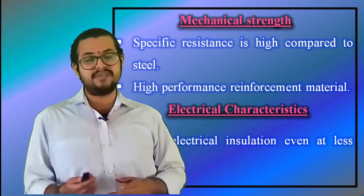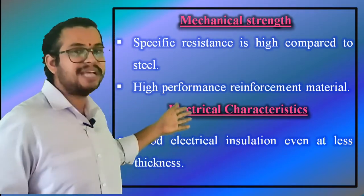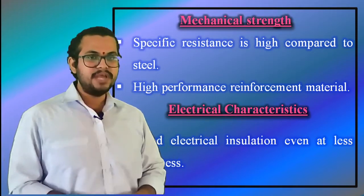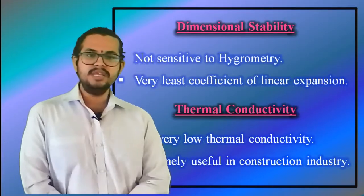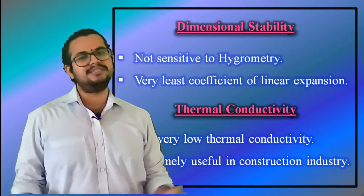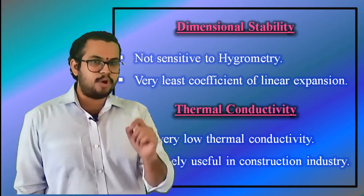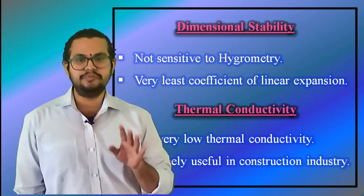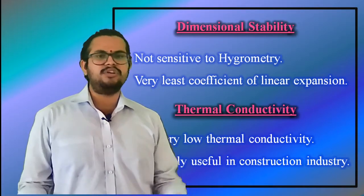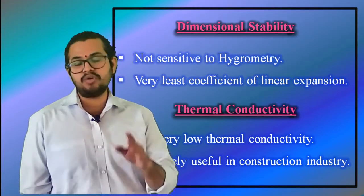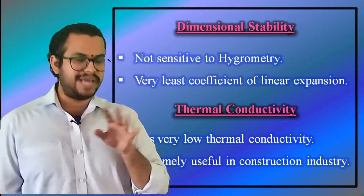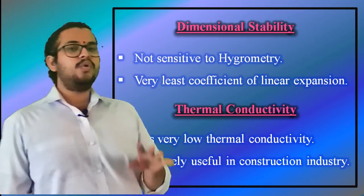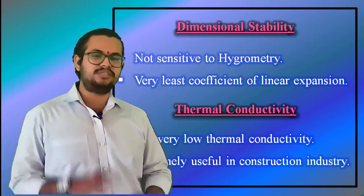Electrical characteristics: fiberglass has good electrical insulation even when its thickness is incredibly small. Dimensional stability: fiberglass is not sensitive to variations in hygrometry — defined as the measure of the moisture content of gases, especially the humidity of the atmosphere. The coefficient of linear expansion is also fairly low.